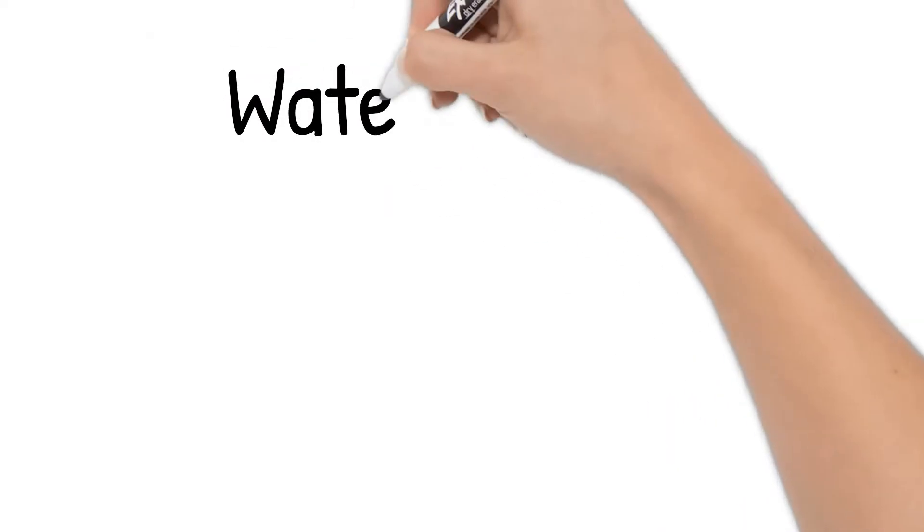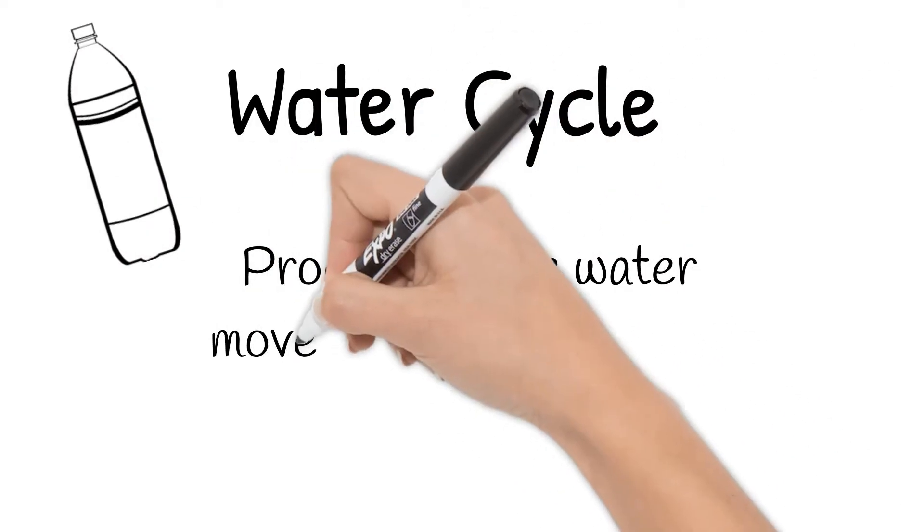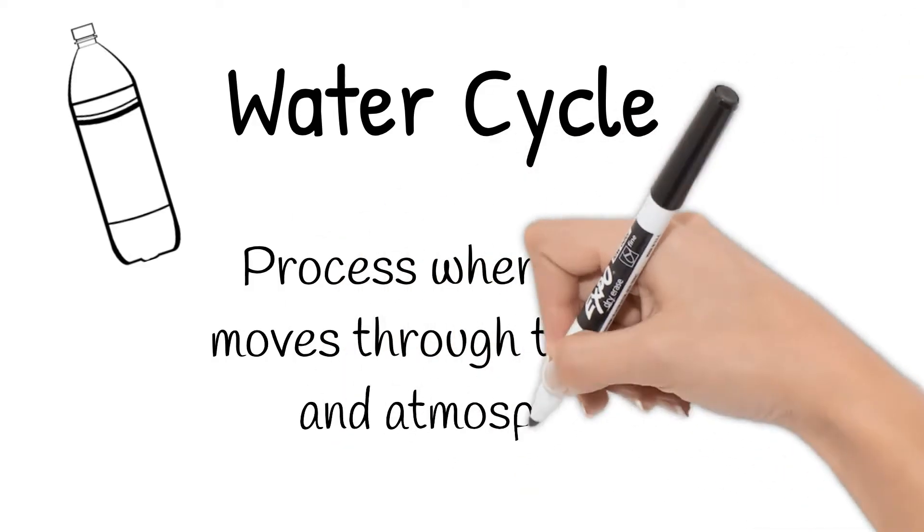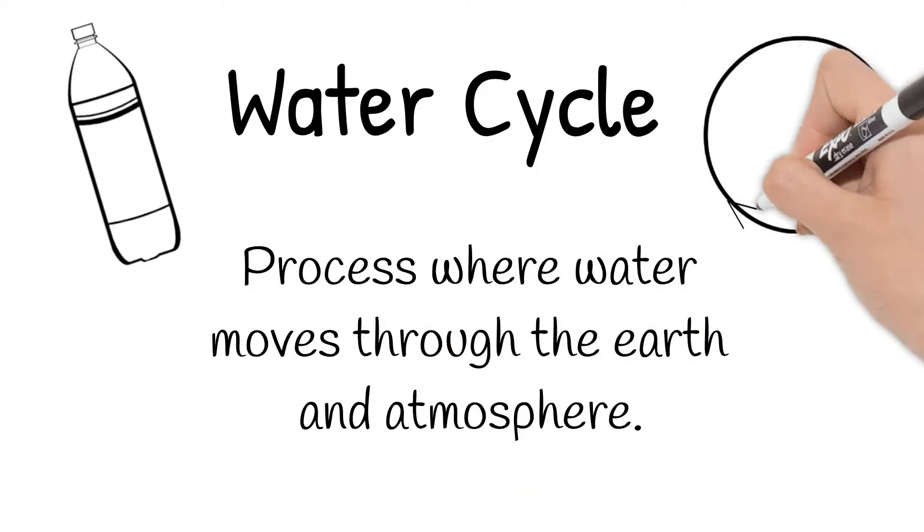Let's talk today about the water cycle. The water cycle is the process that water moves through the earth and atmosphere. Because it is a cycle, we can begin talking about it from really any point. Today, I'm going to start with the ocean.